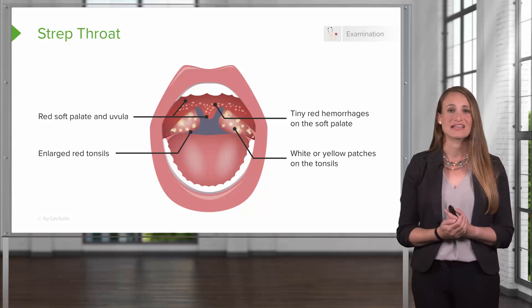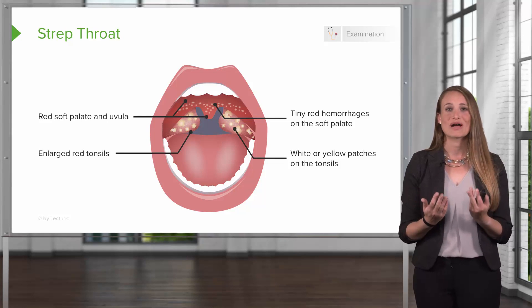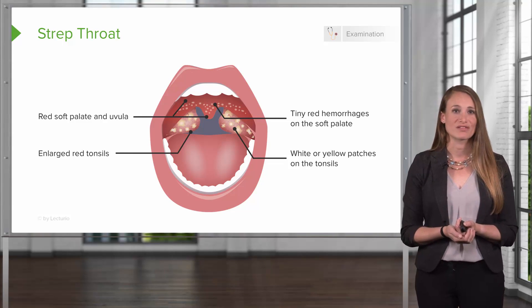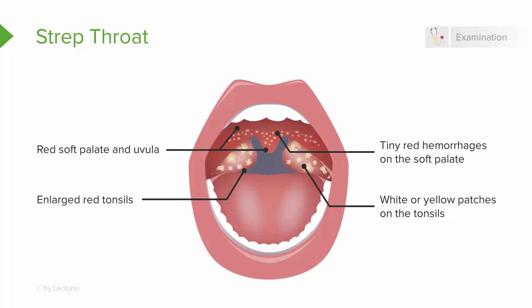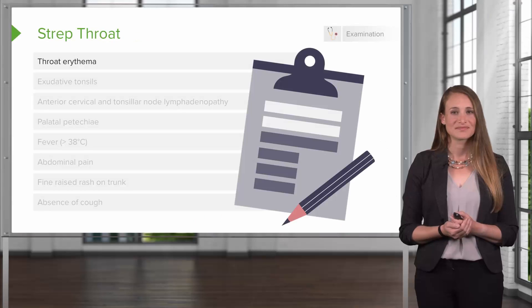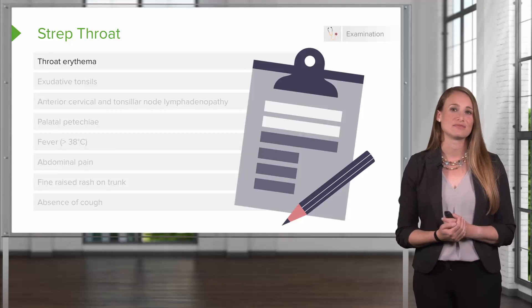On exam, have your patient open their mouth and use your light to look at the back of the throat. You're looking for a few characteristics: the soft palate will look red, the uvula may be red and enlarged, and you'll grade the tonsils according to size. There may be tiny red pinpoint hemorrhages on the soft palate, and the patient may have white or yellow patches on their tonsils. These are all classic signs and symptoms of strep throat.